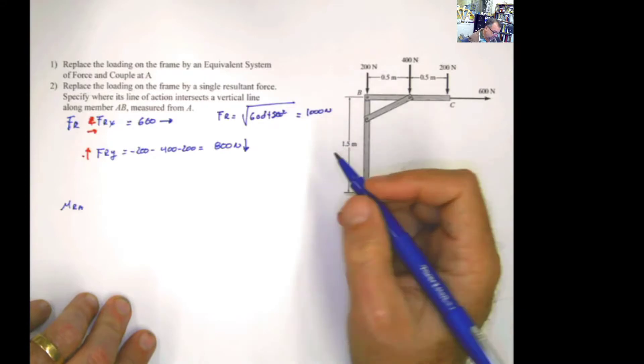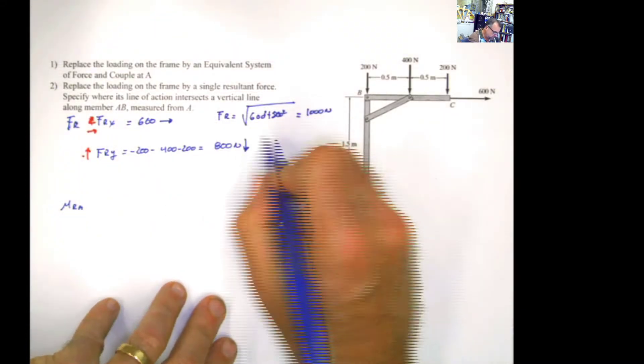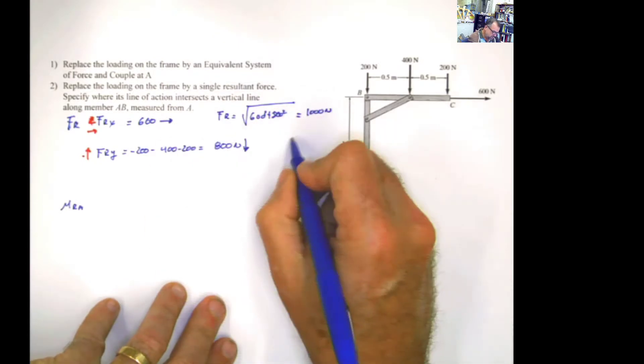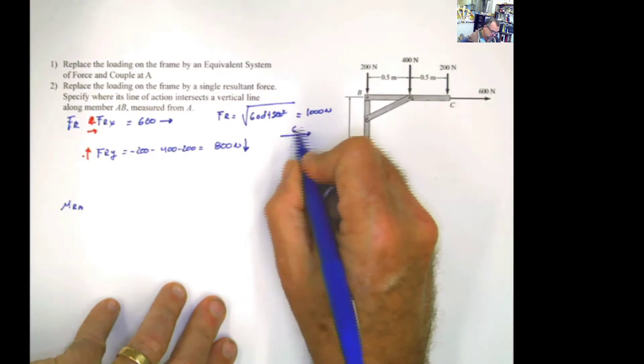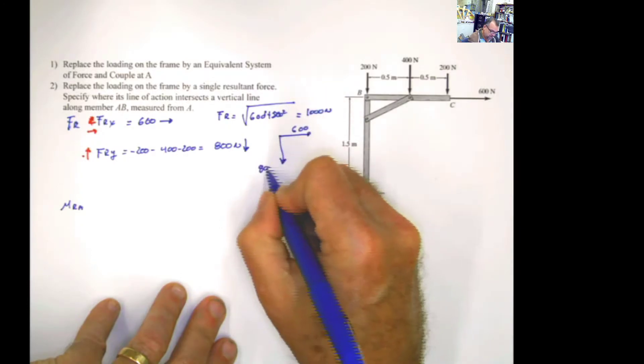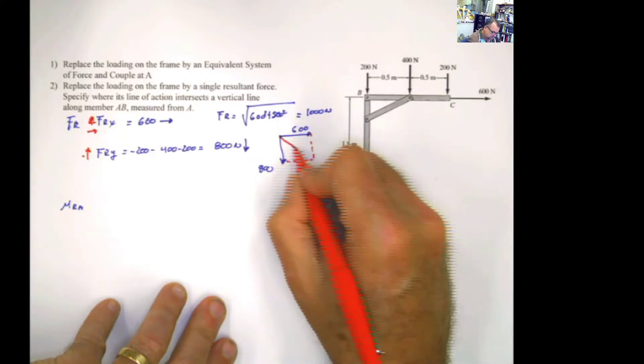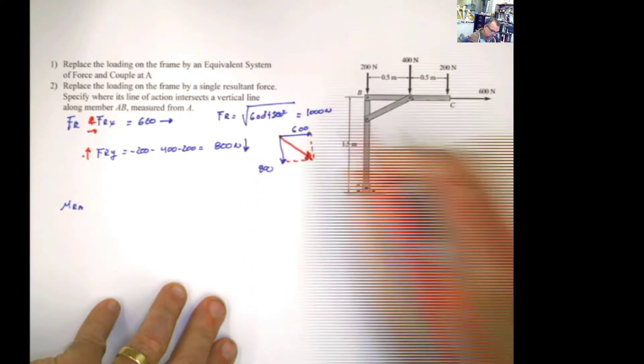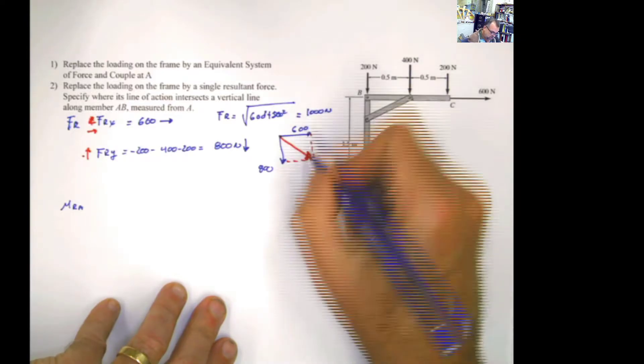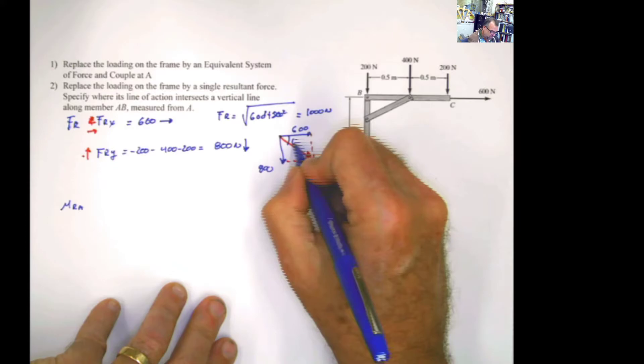And that would be 1,000 newton. And the other thing that you need to calculate is the angle of this force. Plot these two values. 600 in this direction, 800 in this direction. Complete the box or the parallelogram. The resultant force will be this one, which is 1,000.